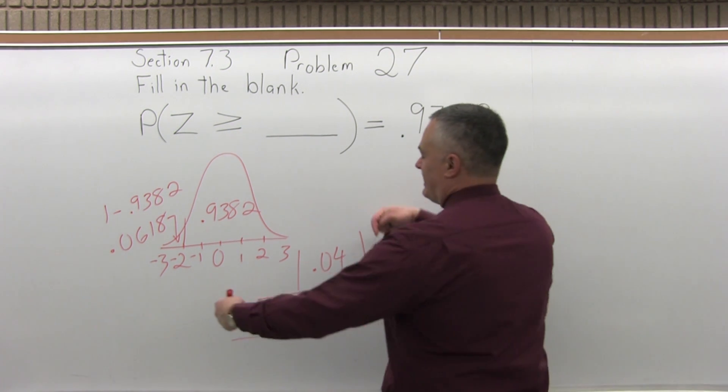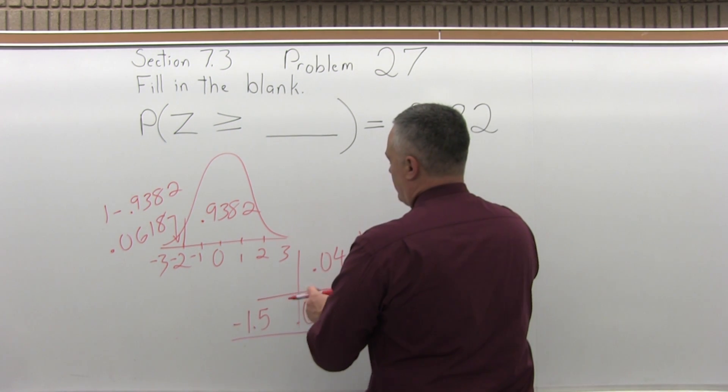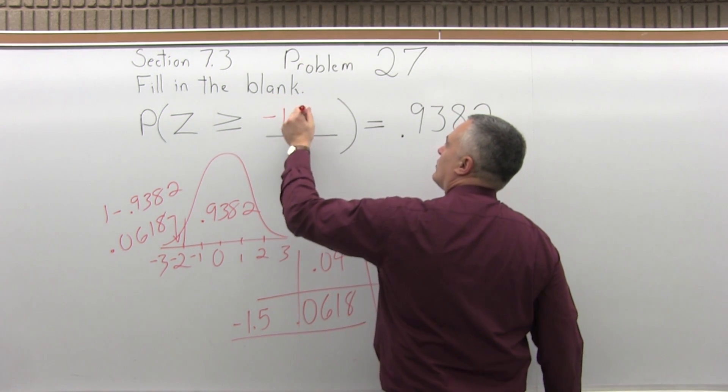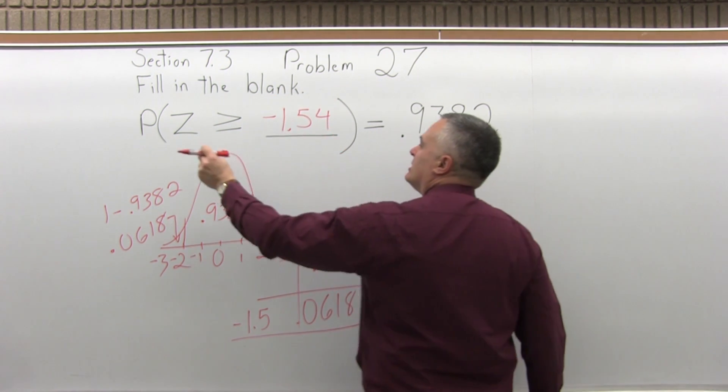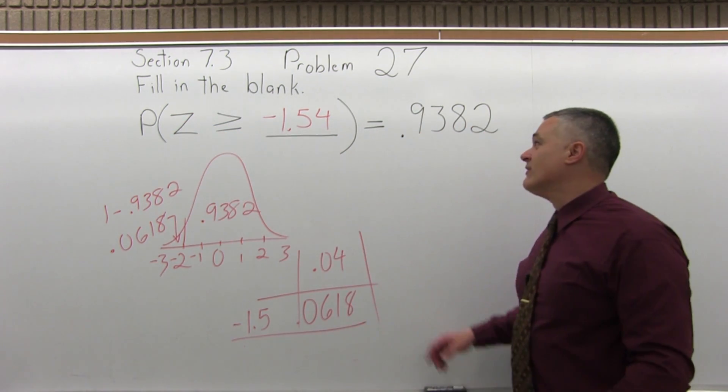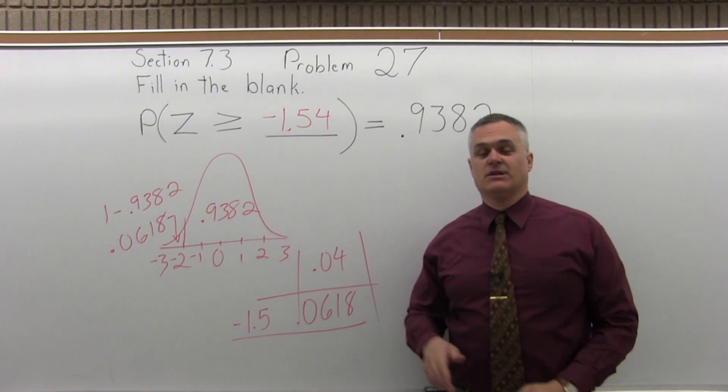So when you look up negative 1.54, you would get the .0618. So that's what fills in the blank, negative 1.54. So the probability that Z is greater than or equal to negative 1.54 is equal to .9382.